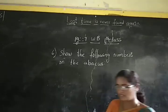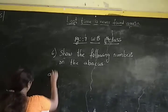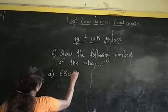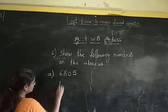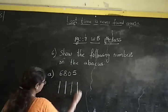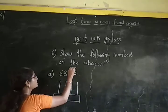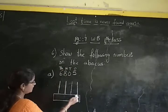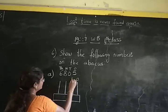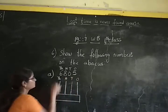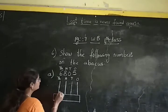The first number is 6805. Now we have to show 6805 on the abacus. For this, let us draw the abacus. Here I have drawn 4 spikes because this number is starting from the thousands place. This is the 1's place, 10's place, 100's place, and 1000's place. In thousands place, we are having 6, so we have to draw 6 beads.